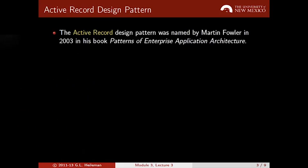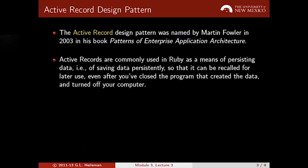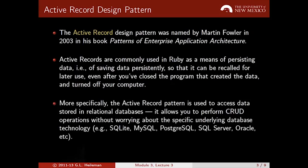The Active Record Design Pattern was created by Martin Fowler, and it's described in his book, Patterns of Enterprise Application Architectures. It's commonly used in Ruby as a means of persisting data to your database so that you can recall that data later, save it, and then pull it back up when you need it. The Active Record Design Pattern is used to perform the CRUD operations: create, read, update, and destroy.